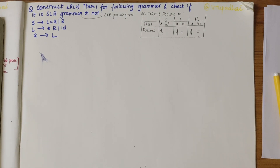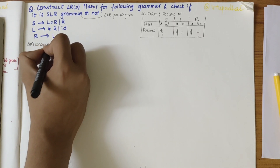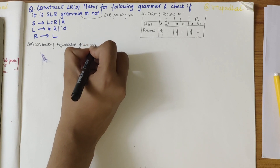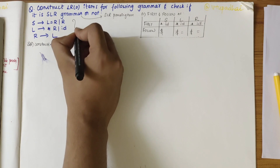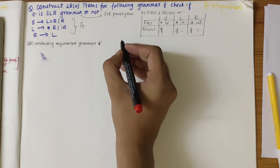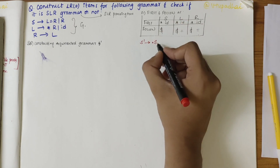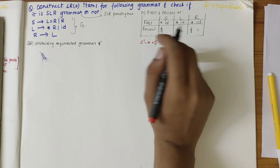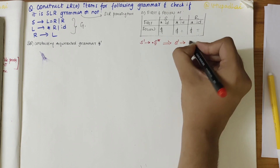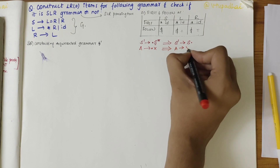My next step is to construct the augmented grammar G' from the given grammar. Here I will be constructing the augmented grammar. My first step is to write S' derives dot S. Then, S being a non-terminal, I should write all the possible productions of that non-terminal with a dot at the beginning, converting from the A derives dot X form to the A derives X dot form.